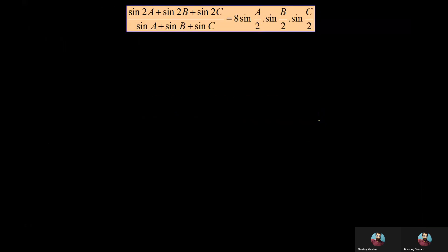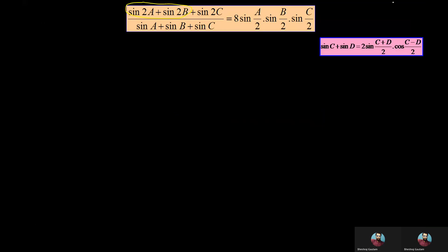Let's start by first combining the first two terms from the numerator, that is sin 2A plus sin 2B, using the formula sin C plus sin D equals 2 sin((C+D)/2) cos((C-D)/2), where in place of C we have 2A and in place of D we have 2B.